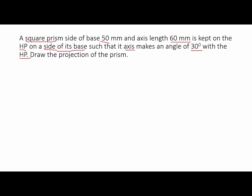Now to start this question, always see on which plane it is kept. It is kept on the HP. So whenever it is mentioned that it is kept on the HP, we will start with drawing the top view — the true shape of this object is visible in the top view. When it is kept on the VP, you start with the front view — in the front view it will appear as a square.